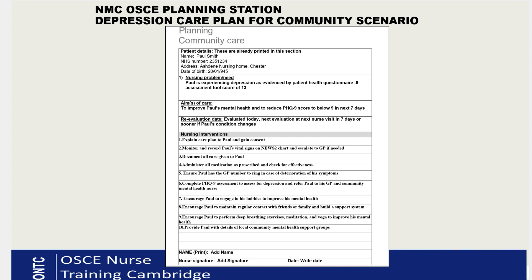Now let's look at the completed template. The patient details are already filled in — just confirm they belong to the same patient from the assessment station. The first section you complete is the nursing problem or nursing need. For depression, you write: 'Paul is experiencing depression as evidenced by Patient Health Questionnaire 9 assessment tool score of 13.' It's clear and simple, with the assessment tool score included.